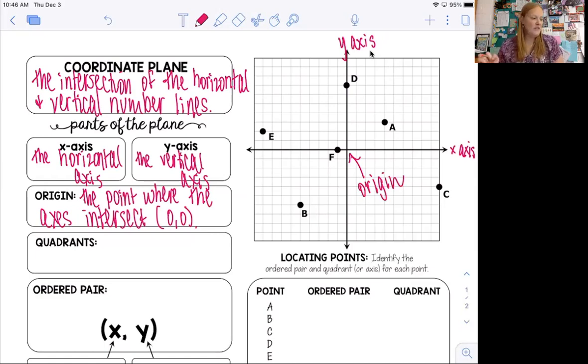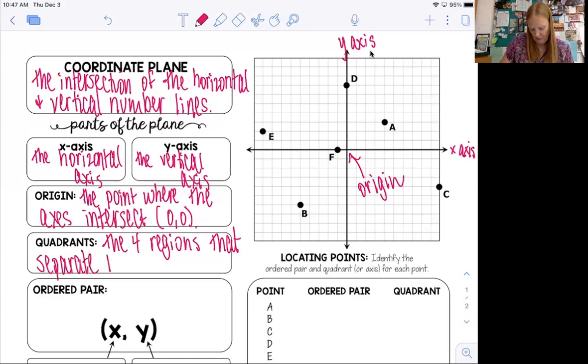Okay, and so now this next part might be new. We've got what are called quadrants, and the word quad means four, so the coordinate plane is split up into four regions, which we call quadrants. So let's put the definition, and then we'll talk about what they are. So it's the four regions that separate the coordinate plane.